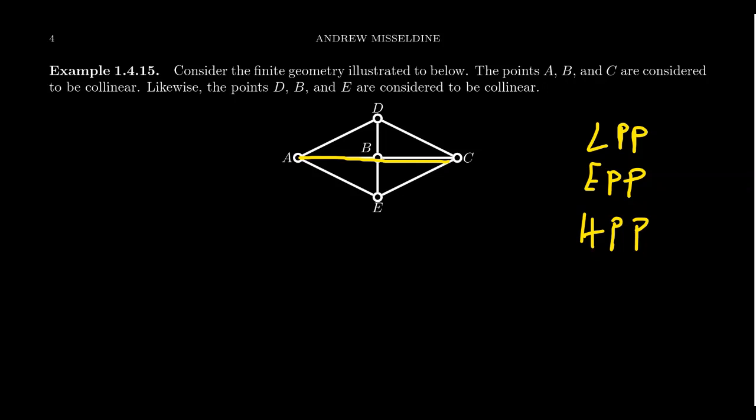There's this horizontal line which contains ABC. There's this vertical line that contains BED. These are three-point lines. So this is a different geometry than the handshake geometry we saw before.